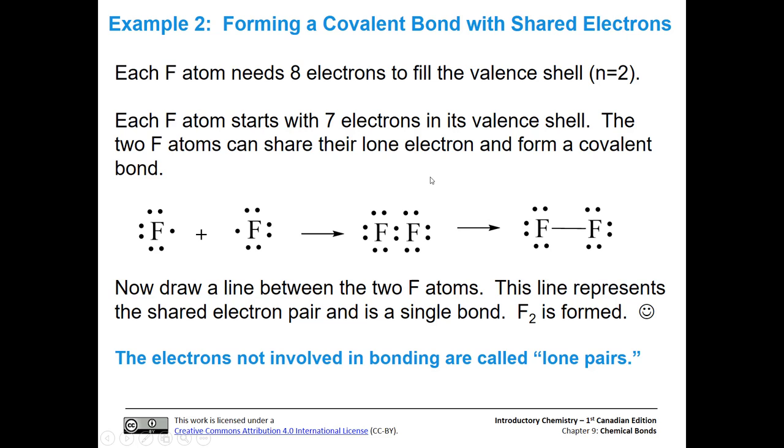Now let's look at fluorine. Fluorine needs eight electrons to fill the valence shell, and it starts with seven electrons each. If two fluorine atoms can get together, they have seven each and would like eight each. Each of them has one to spare. They can share those two single electrons, and then each of them has an octet. Here's an octet for one fluorine, and here's an octet for the other fluorine.